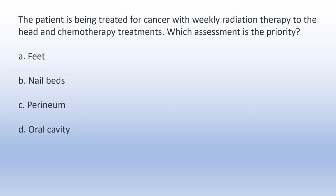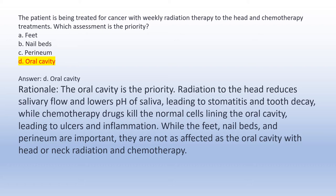The patient is being treated for cancer with weekly radiation therapy to the head and chemotherapy treatments. Which assessment is the priority? A. Feet. B. Nail bed. C. Perineum. D. Oral cavity. Answer D: The oral cavity is the priority. Rationale: Radiation to the head reduces salivary flow and lowers pH of saliva, leading to stomatitis and tooth decay, while chemotherapy drugs kill normal cells lining the oral cavity, leading to ulcers and inflammation. The feet, nail beds, and perineum are not as affected as the oral cavity.